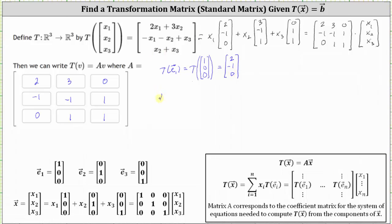Now let's find the transformation of vector e sub two, which is the transformation of the vector (0, 1, 0). So x sub one is zero, x sub two is one, and x sub three is zero. The first entry of the image is two times zero plus three times one, or three. The second component is negative zero minus one plus zero, or negative one. And the third component is one plus zero, or one.